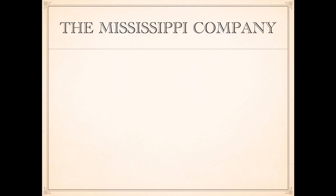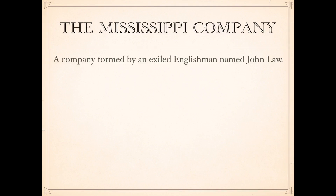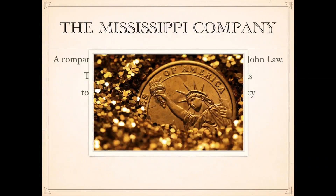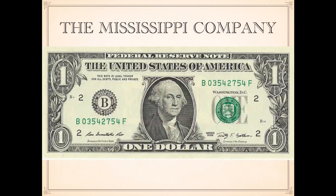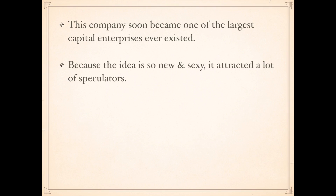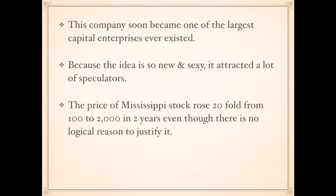Meanwhile in France, the Mississippi Company — a company formed by an exiled Englishman named John Law — had a special mission: to replace metal as money with paper currency. Back then they were still using gold and silver coins; this guy came up with the bright idea of paper money. This company soon became one of the largest capital enterprises ever, because the idea was so new and sexy — it attracted a lot of speculators. It's all about the story.